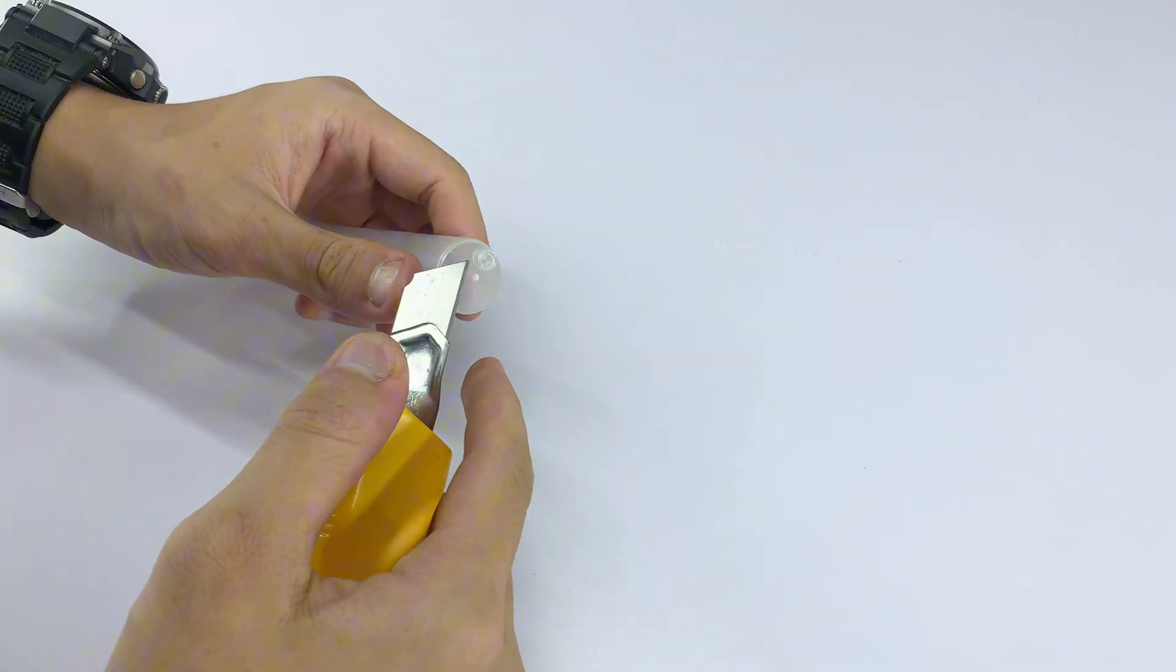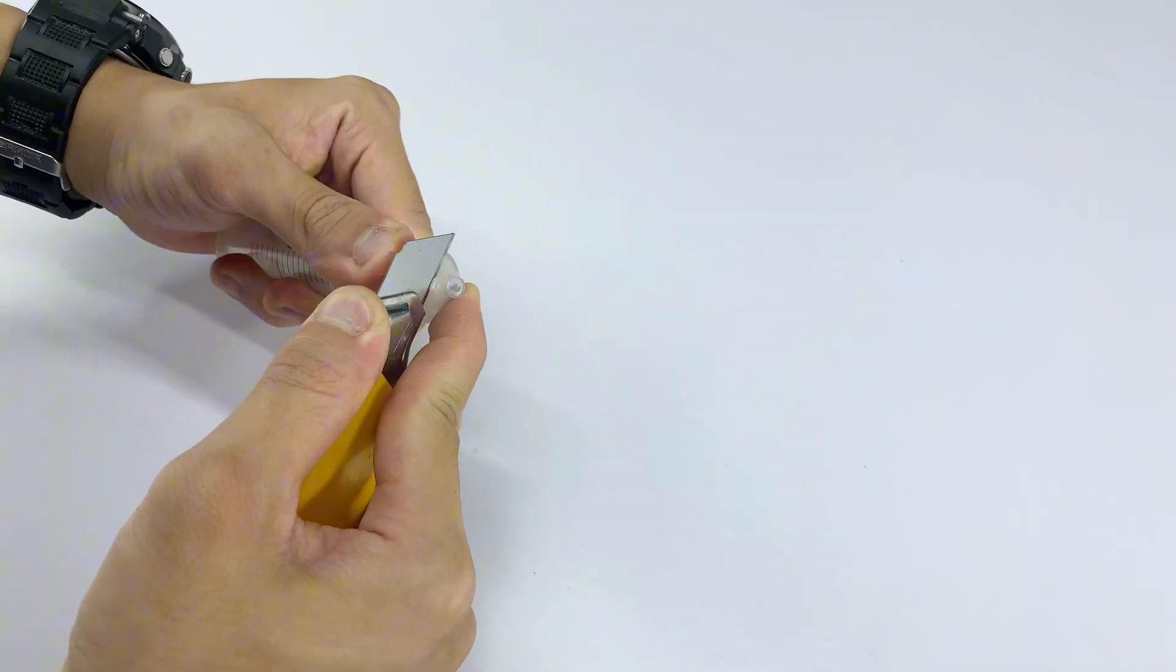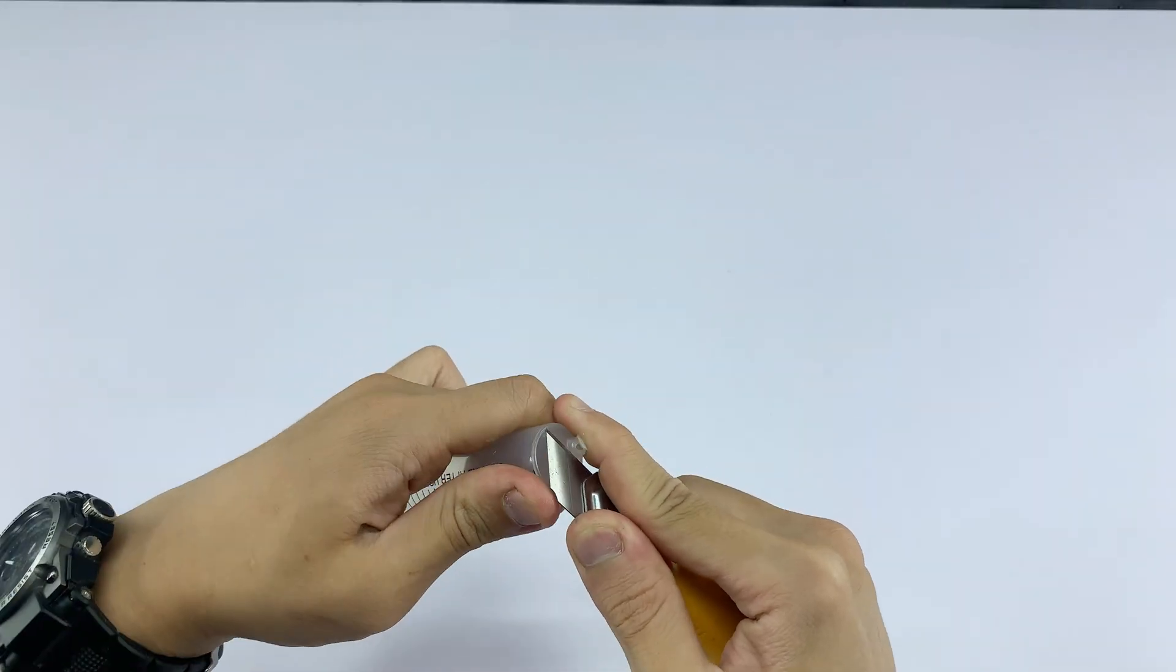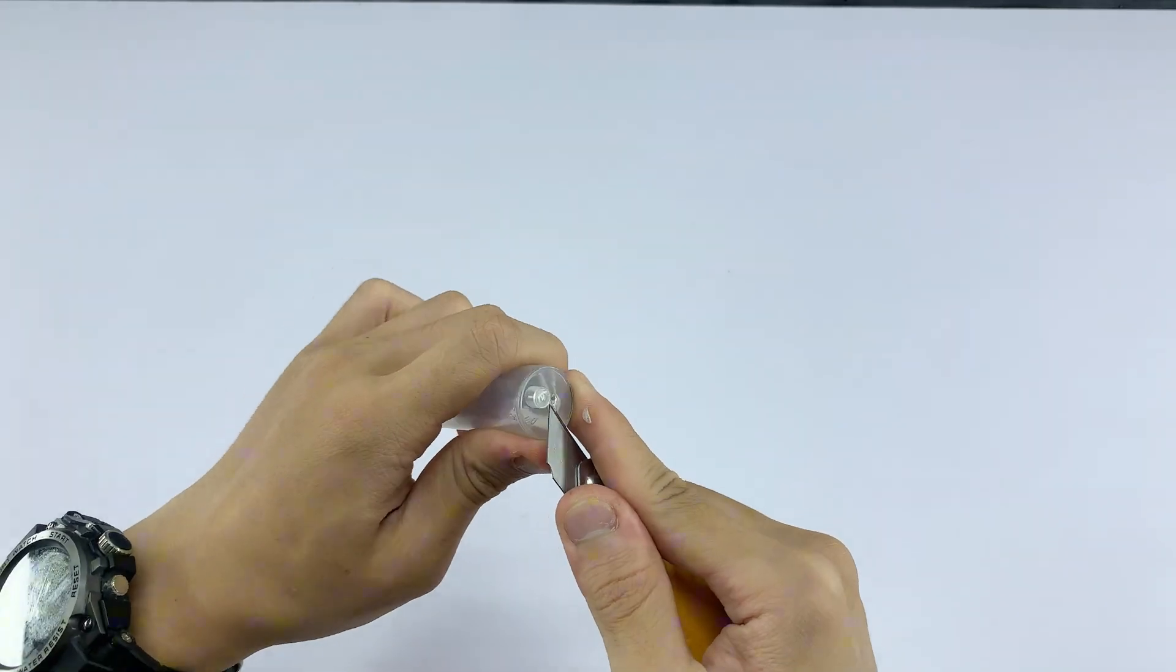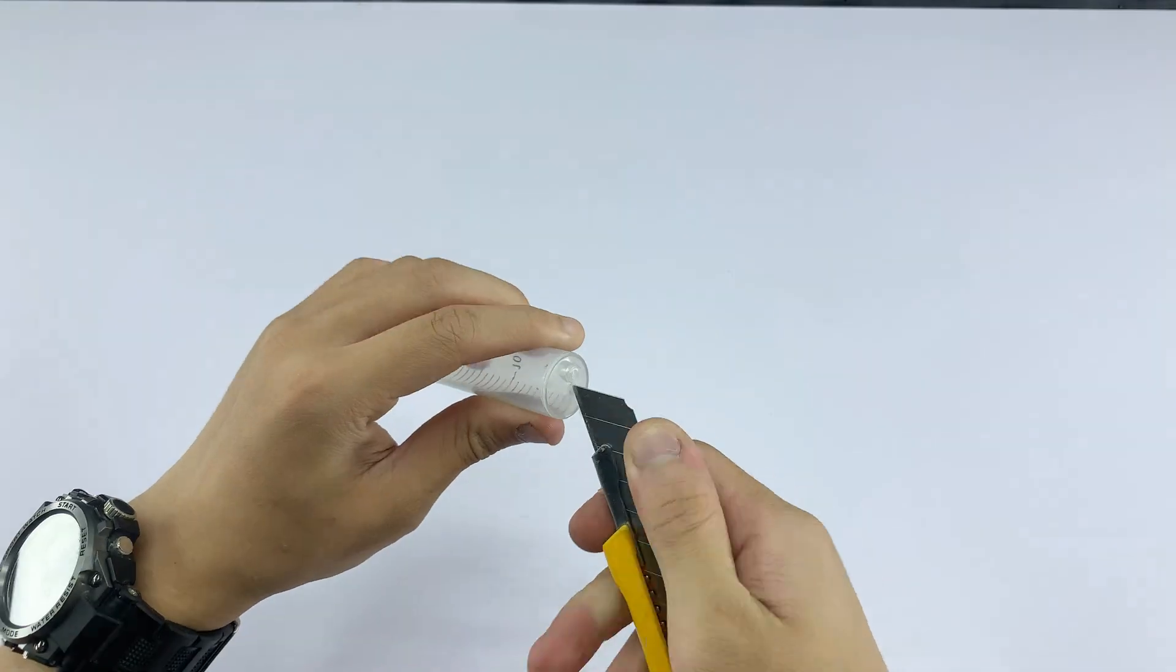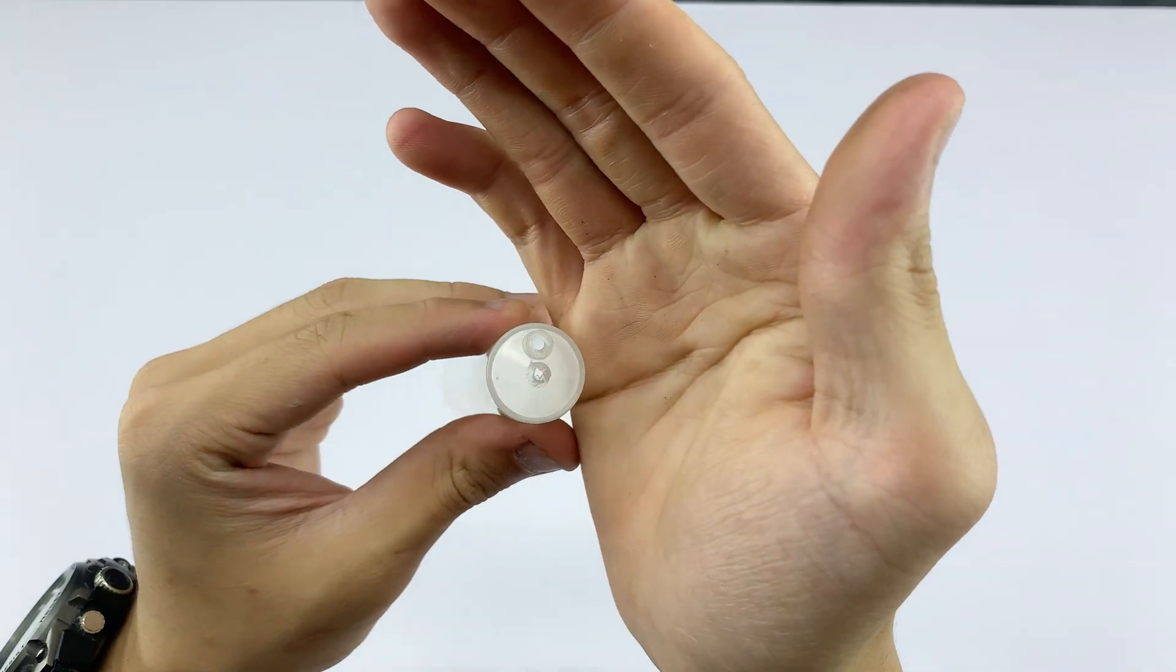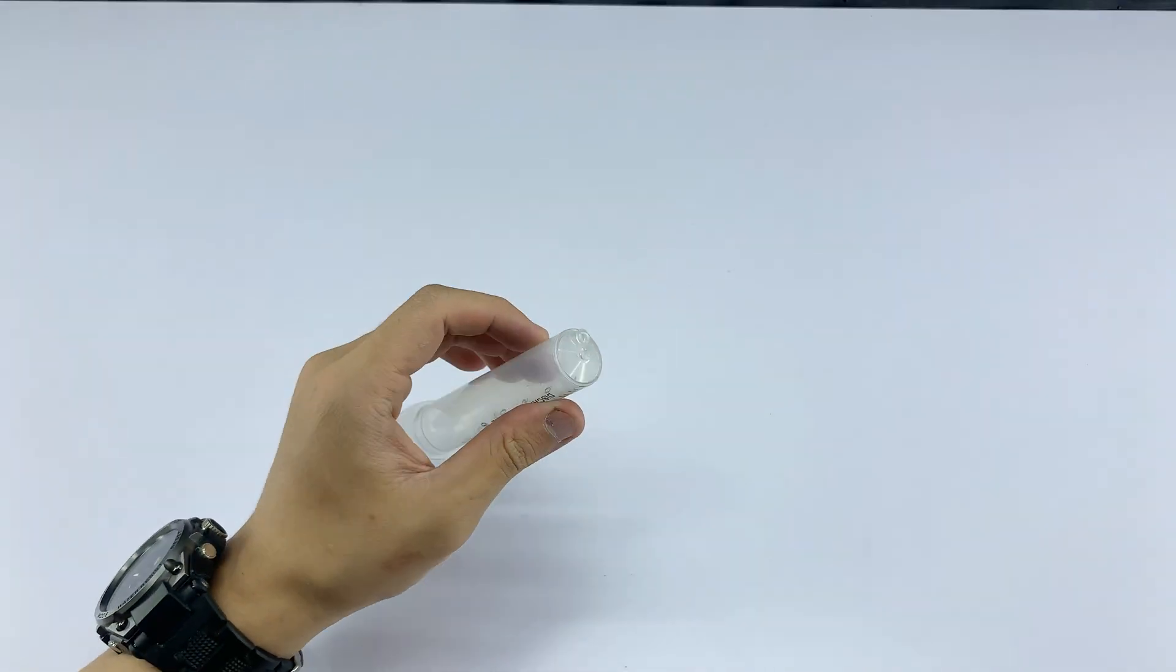First, I'm disassembling a syringe by removing the plunger and the rubber stopper. Now, I'm using a utility knife to carefully trim the top of the syringe barrel. After that, I'm also trimming the small protruding part on the side where a needle would typically attach. I'm making sure the opening is perfectly flat and smooth, as this will be the new working end of our tool.